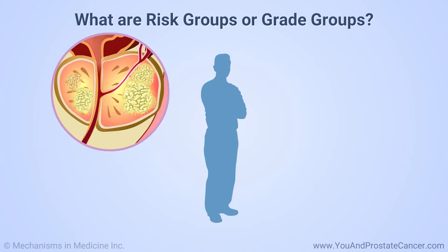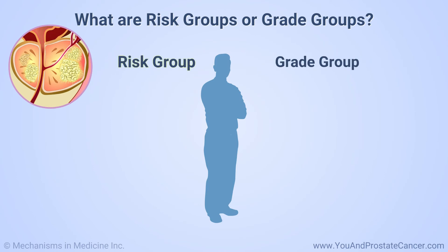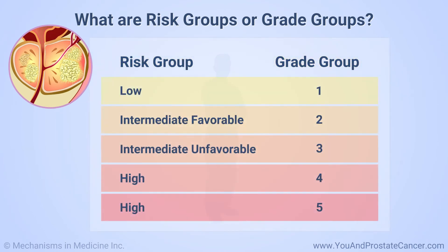Your doctor will then take all the information and put you in a risk or grade group. The group you are in helps the doctor discuss the best treatment options for your prostate cancer. For example, low risk or grade group 1 cancers are not aggressive, so your doctor may recommend simply watching the cancer. If you are in the high risk or grade group 5, your doctor may recommend moving quicker with treatment.